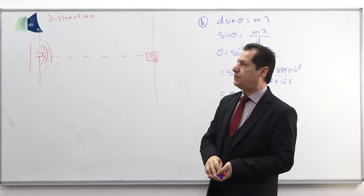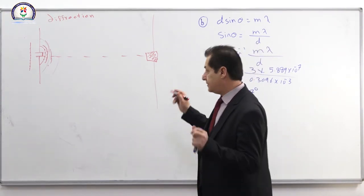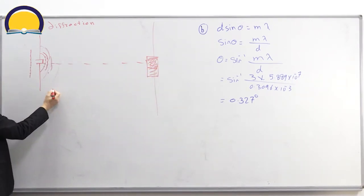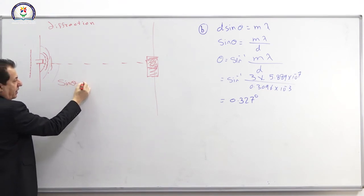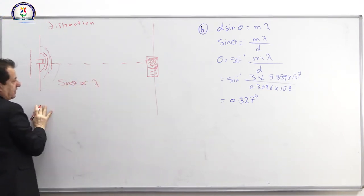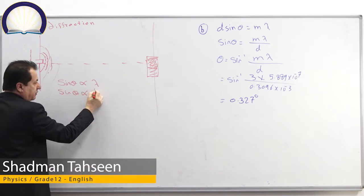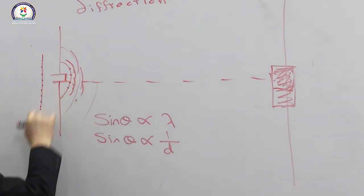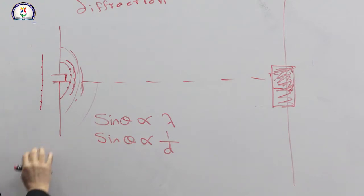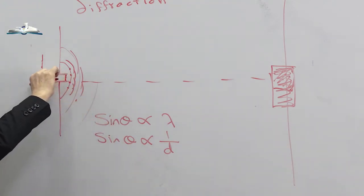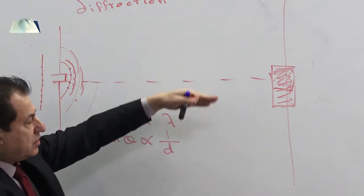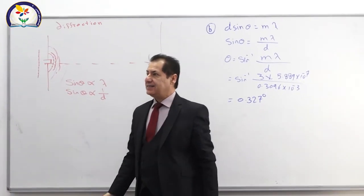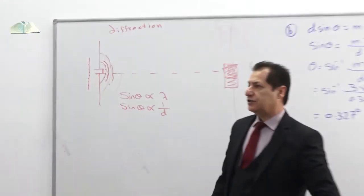Question number twelve: how does the width of the central region of a single slit diffraction pattern change as the wavelength increases? Since sinθ is proportional to λ and inversely proportional to D (slit width), as the wavelength increases, the angle increases and the width of the central maximum increases. Longer wavelength light diffracts more.